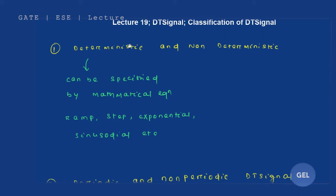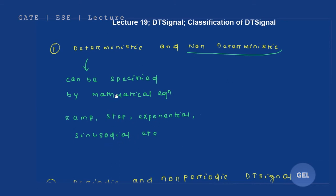Let's start with deterministic and non-deterministic. As the name suggests, a deterministic signal is one which can be determined — it can be specified by a mathematical equation. Non-deterministic signals, like noise signals, cannot be specified by a mathematical equation. Ramp, step, exponential, sinusoidal, and sinc function — all of these signal types are deterministic because they can be defined or specified by a mathematical equation.